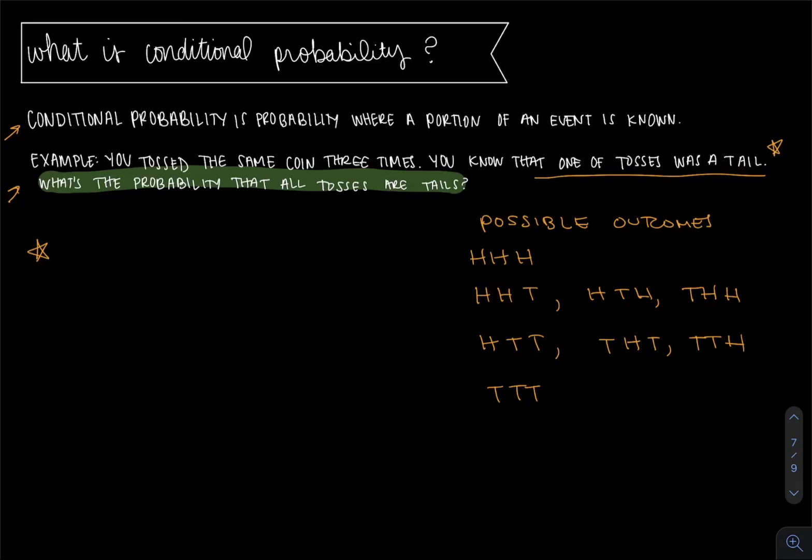But we want to look at the statement here: one of the tosses was a tail. The question we need to answer is which possible outcomes have at least one tail or one T.